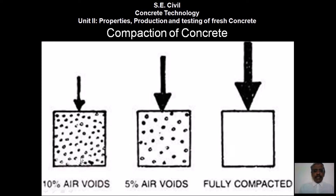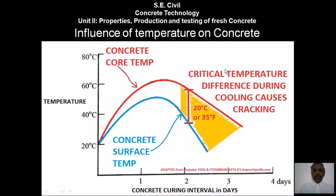Compaction of concrete: a concrete cube with 10% air voids — after some hand compaction it reduces to 5% air voids and carries more load. If compaction is done properly using vibrators, the concrete becomes fully compacted and takes even more load.